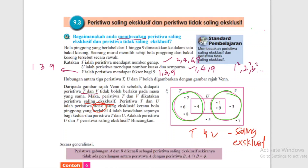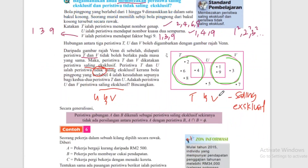Adakah peristiwa U dan V peristiwa saling eksklusif? Tidak eksklusif. Kenapa tidak eksklusif? Sebab peristiwa U termasuk dalam V - unsur yang ada dalam U ada dalam V. Jadi settle maksud saling eksklusif dan peristiwa tidak saling eksklusif.